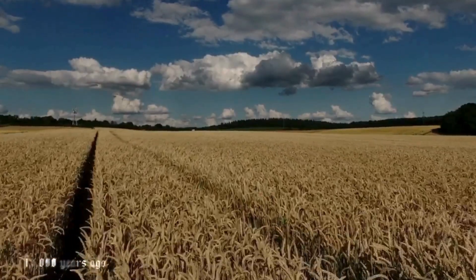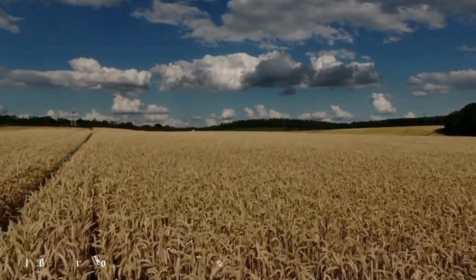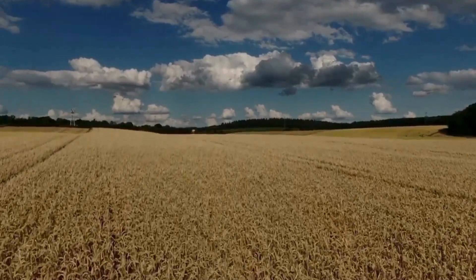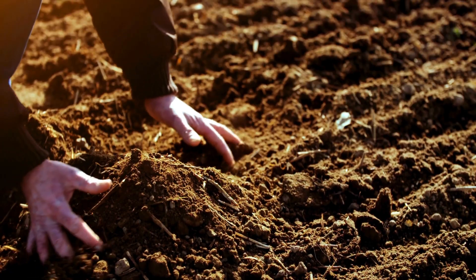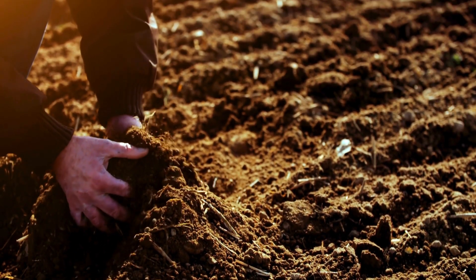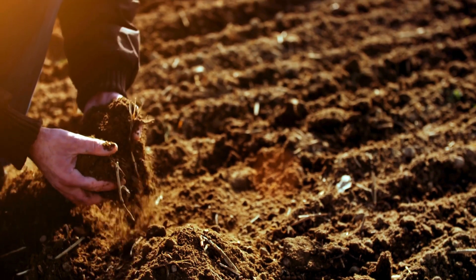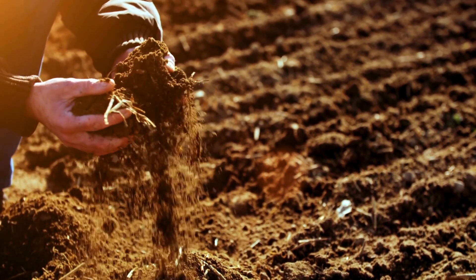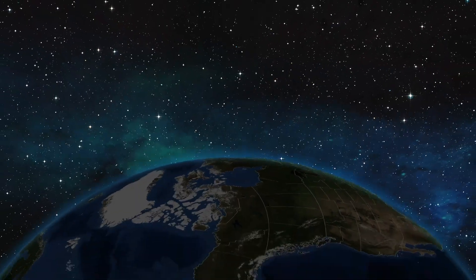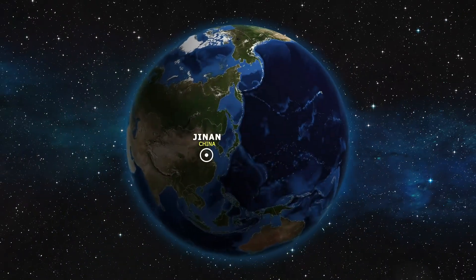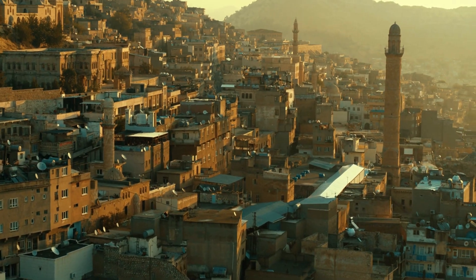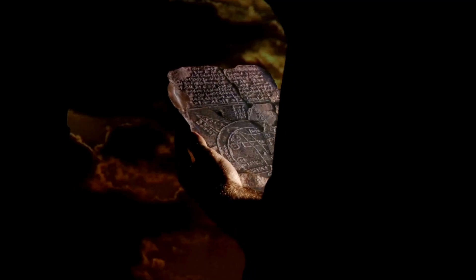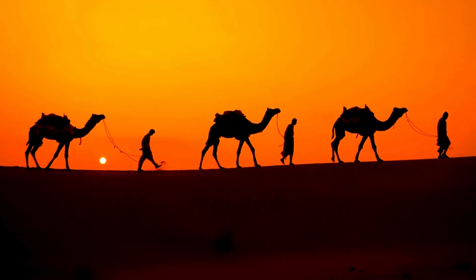With the dawn of agriculture around 10,000 years ago, human societies underwent a profound transformation. No longer solely dependent on hunting and gathering, humans began to settle in one place, forming the first permanent settlements. This marked the beginning of civilization. As populations grew, so did the complexity of human society. The first cities emerged, along with writing, trade, and the division of labor. In regions like Mesopotamia, Egypt, the Indus Valley, and China,